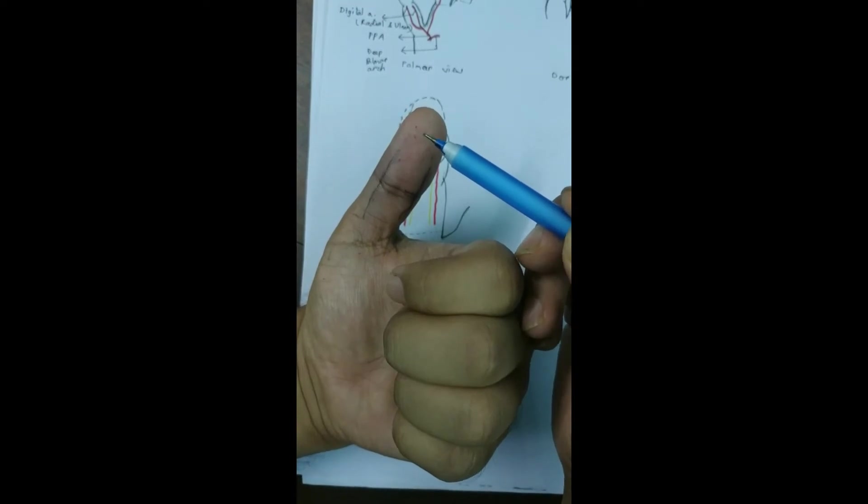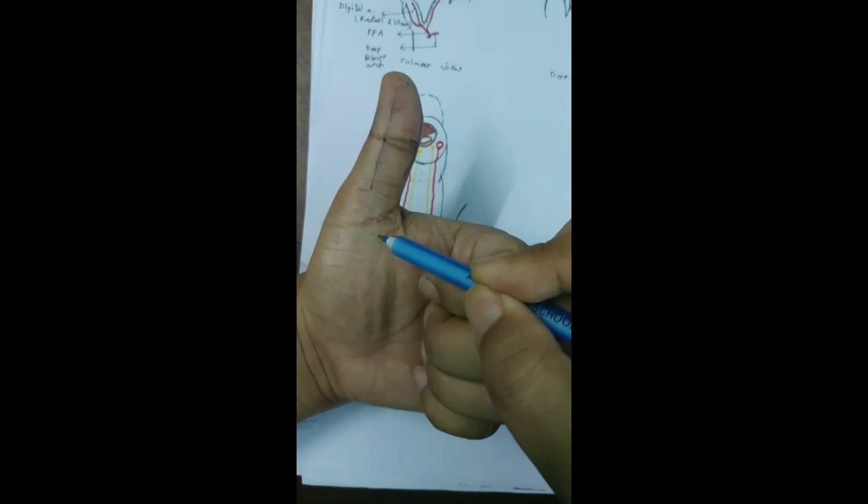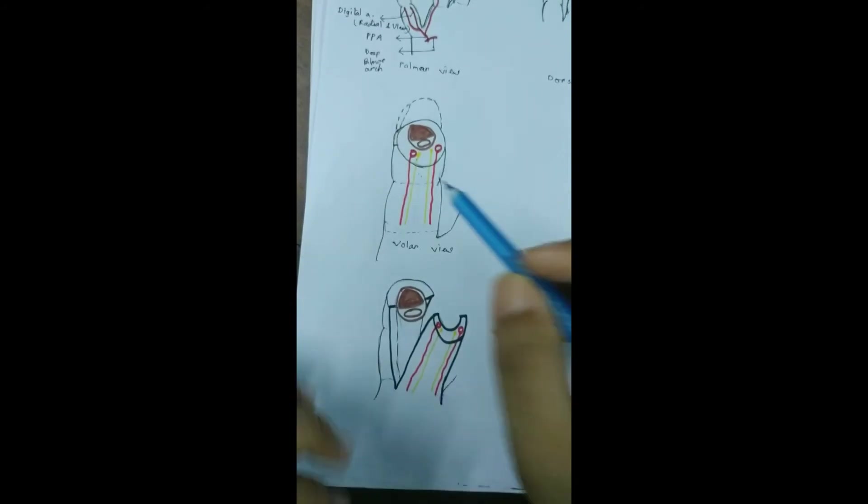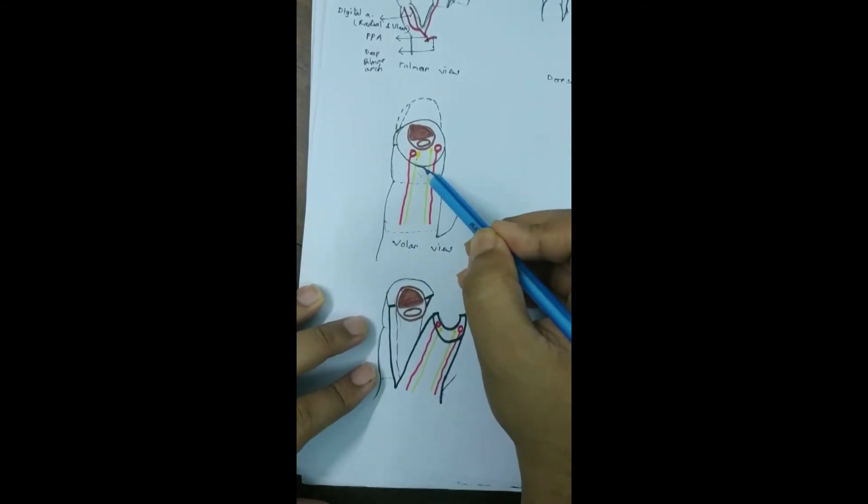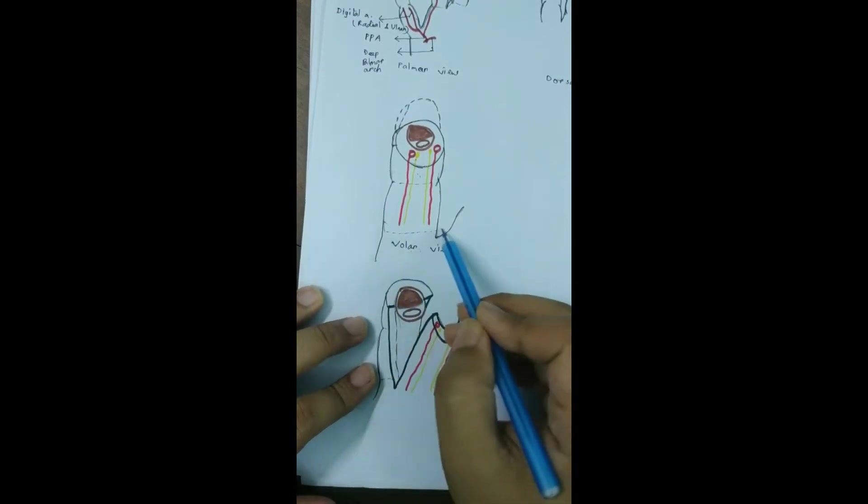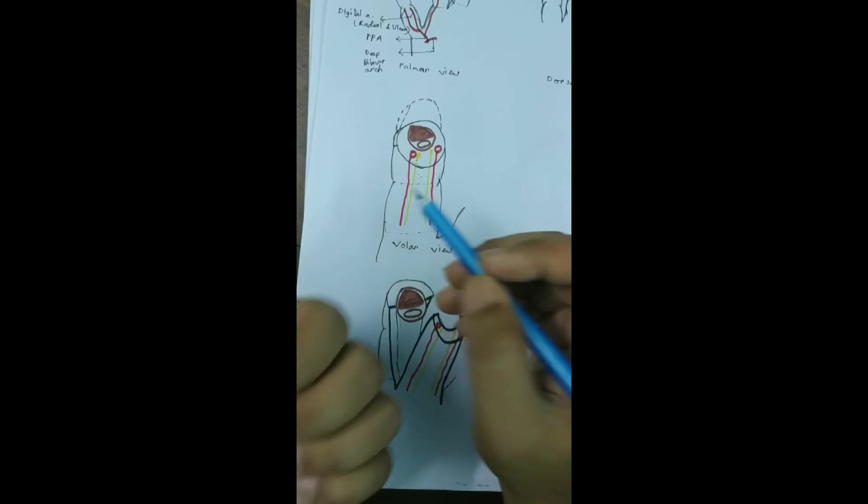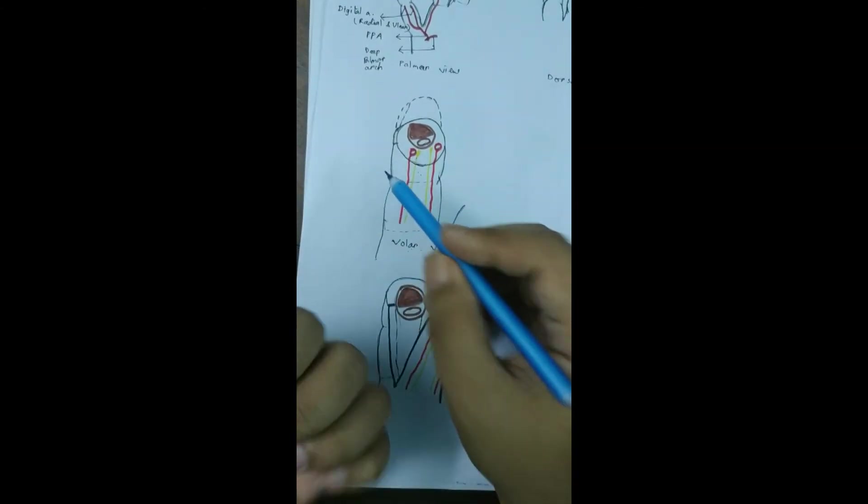The area of the flap is from the corner of the defect up to an area just proximal to the MP joint crease, and on both sides the mid-axial line. That is from the corner of the defect up to just proximal to the MP joint crease.